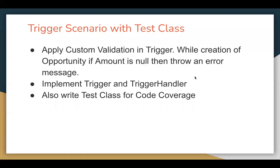In this video, I'm going to demonstrate how we can apply custom validation in a trigger. That custom validation will be applied upon creation of an opportunity if amount is null. In that case, an error message will be thrown on the UI. I will be implementing a trigger on opportunity, then implementing a method in the trigger handler, and then I'll demonstrate how to implement its test class so that code can be covered.